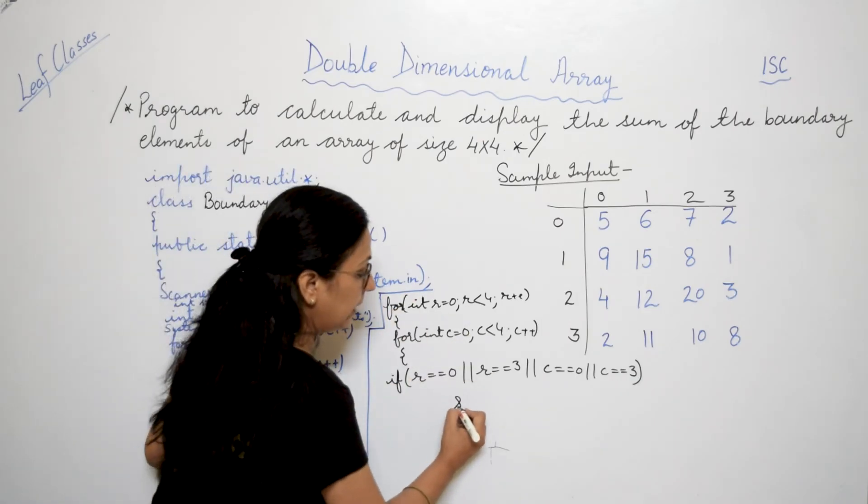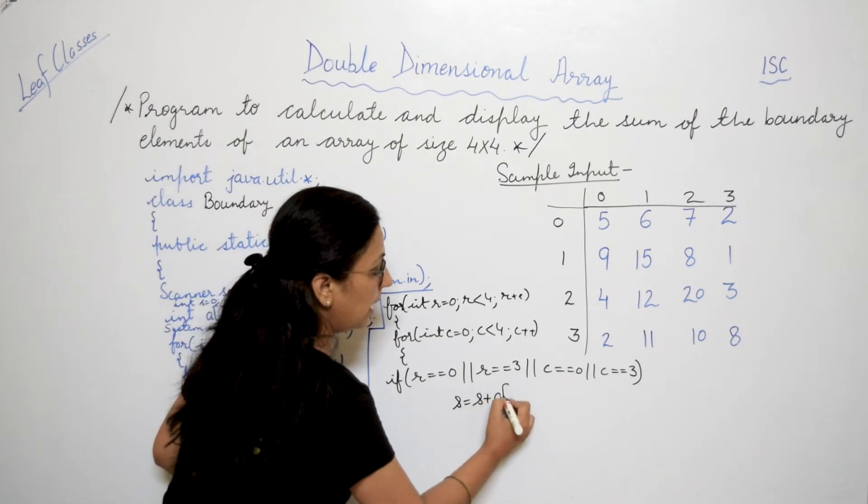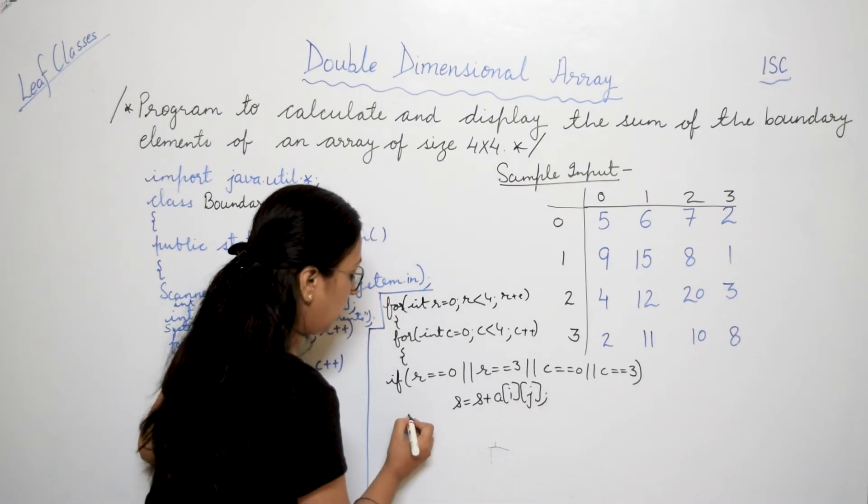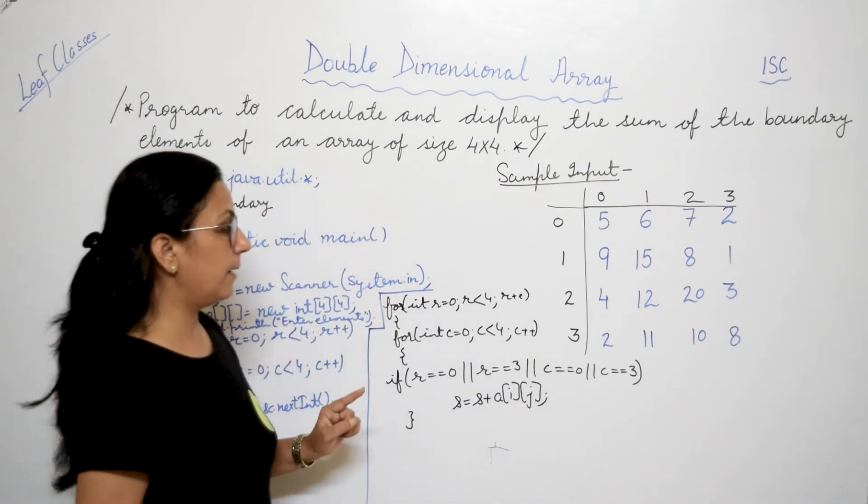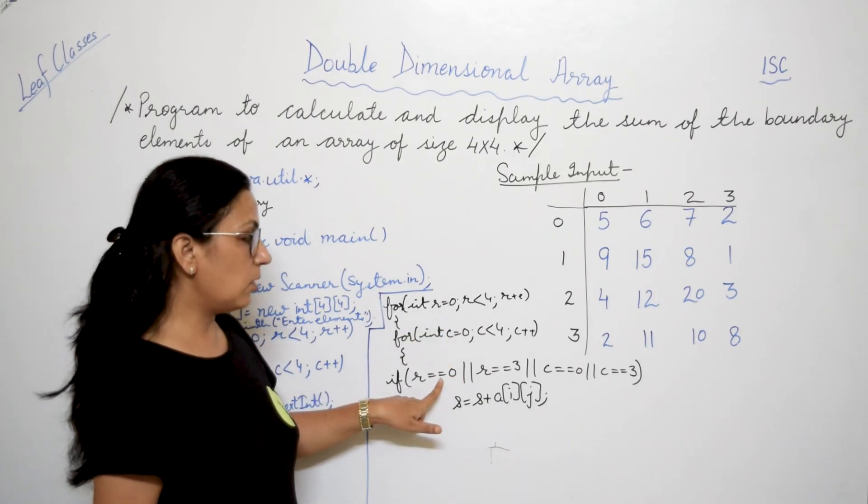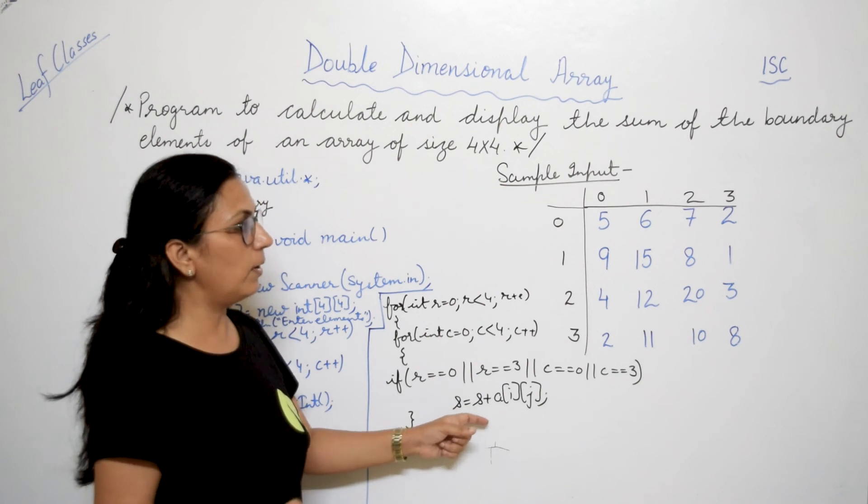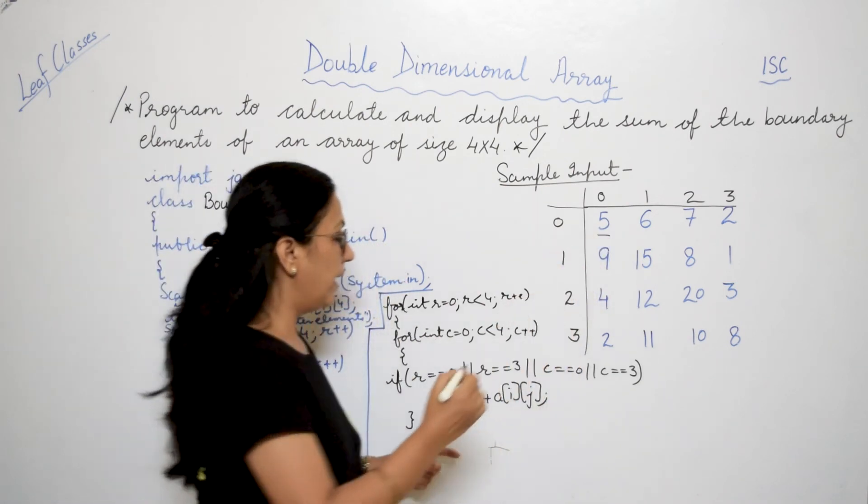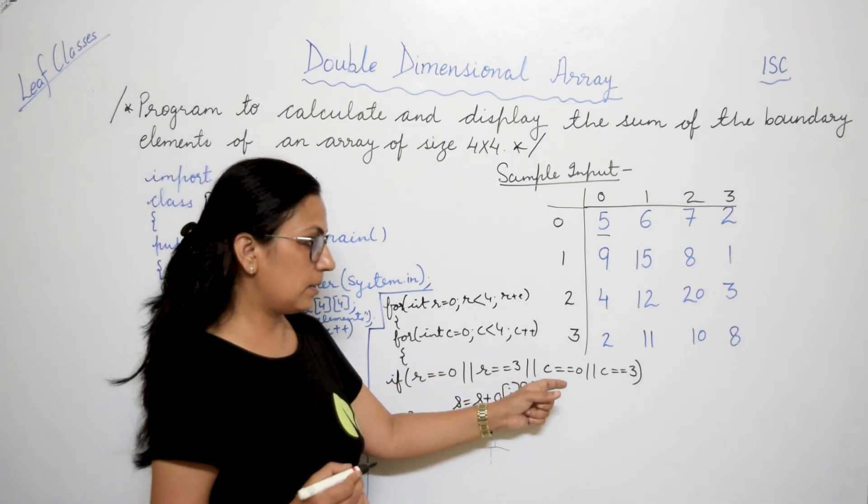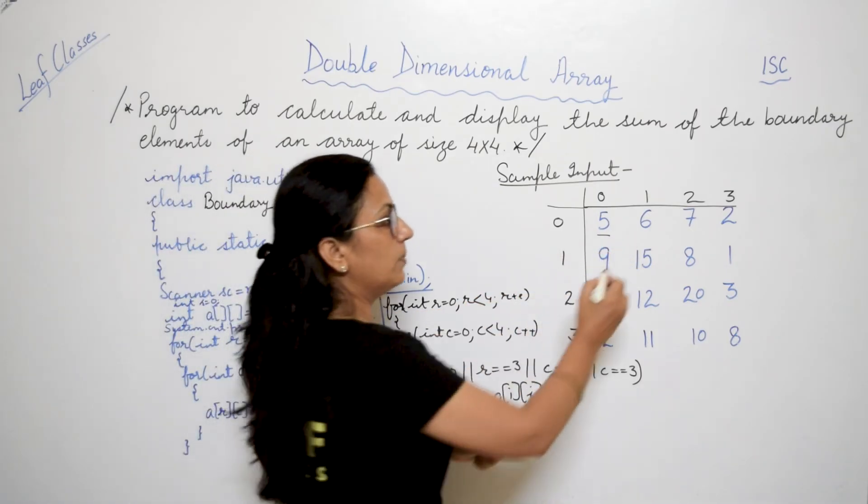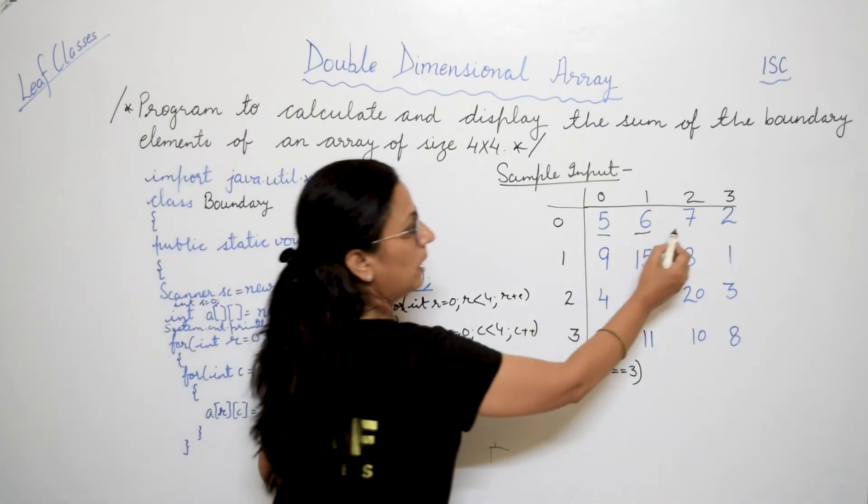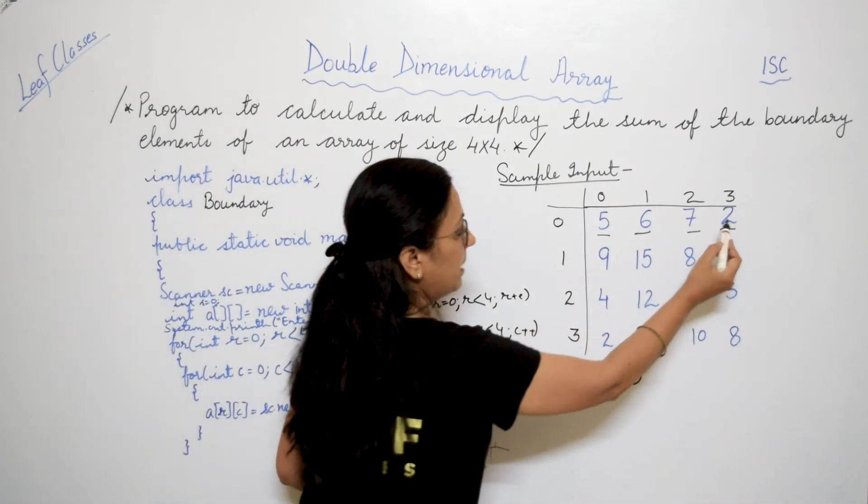So what we have to do in that case? S equals to S plus a[r][c]. We have calculated this, and we have closed the loop here. First time, what will come? Your 0, and this value is also 0. C is 0 and r is also 0, that element got added. Next time, r is 0, c is 1. Again, r is 0, this element also came. Then r is 0, c is 2, this element came. R is 0, c is 3, this element came.